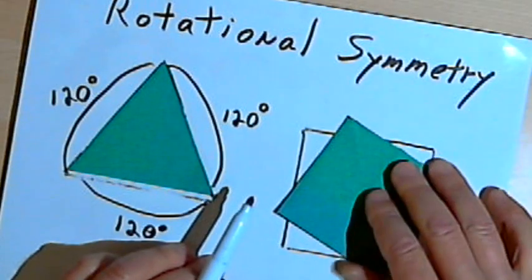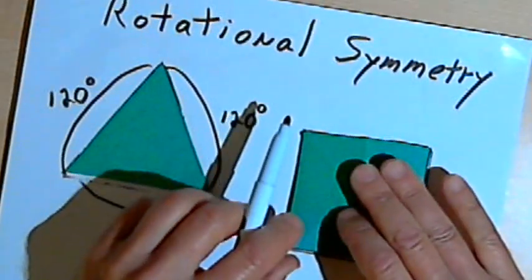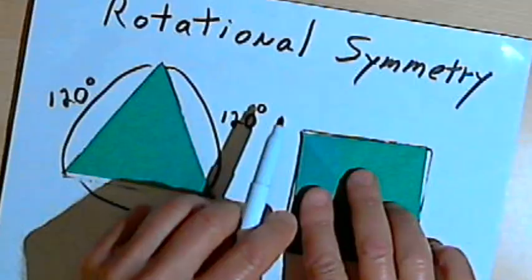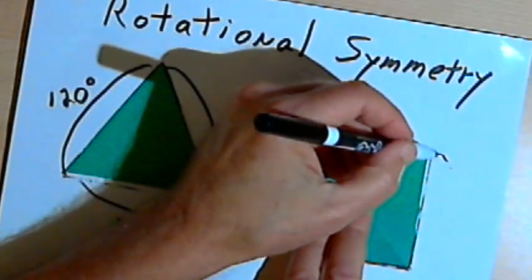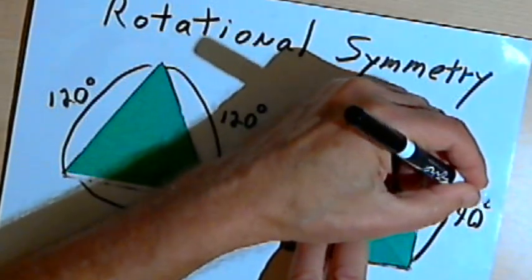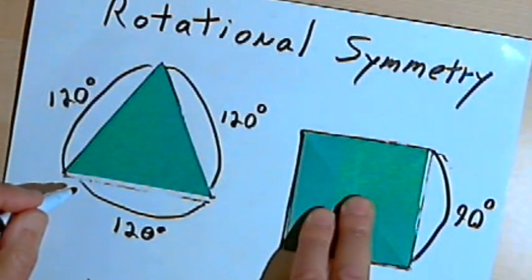If I have a square, as I have here, I would just have to rotate it 90 degrees until it matches up again, or one-quarter turn. So that has 90-degree rotational symmetry.